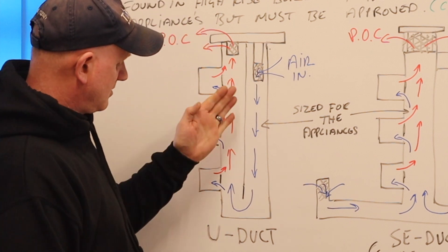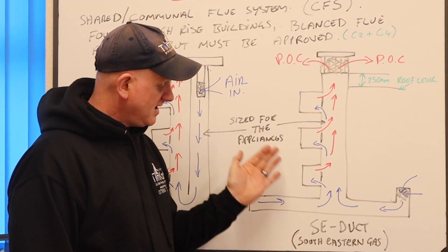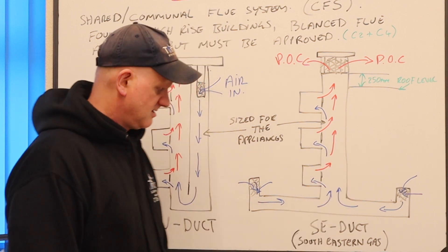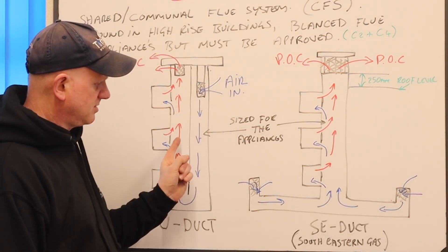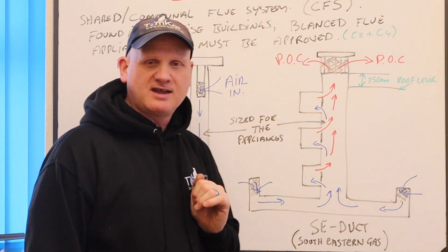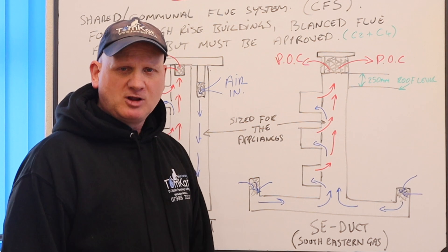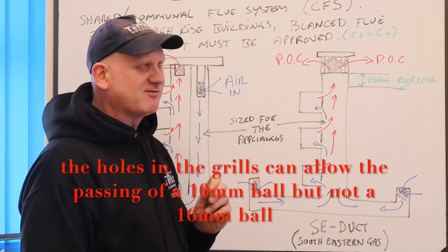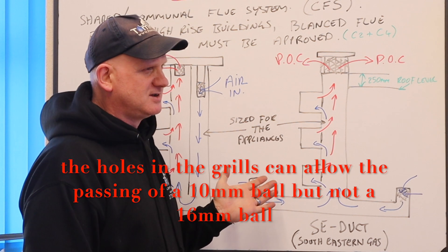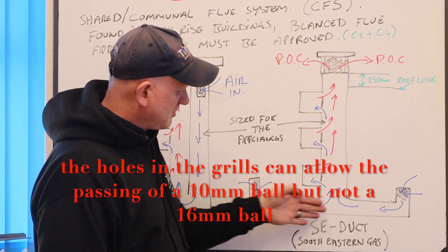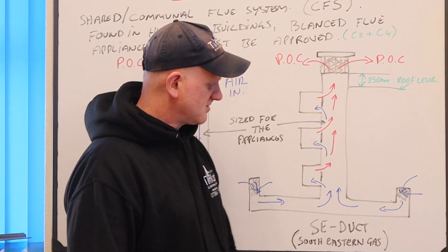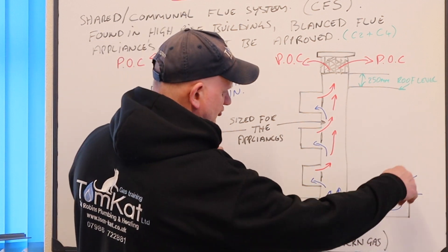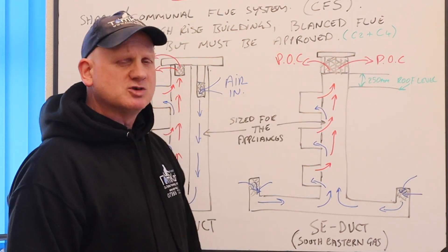That's the U-duct. Now if we look at the SE-duct - and it's called an SE-duct because South Eastern Gas invented it - obviously this is a U-duct because it's in a U shape. You can see here the air is drawn from ground level. The problem we had with these - because I have actually worked on these systems when I worked at Manchester City Council - is they used to fill up with debris and water and leaves and stuff like that and wouldn't give a nice clear passage for the air. So the air would be drawn down at the bottom and then the products of combustion would come out at the top.